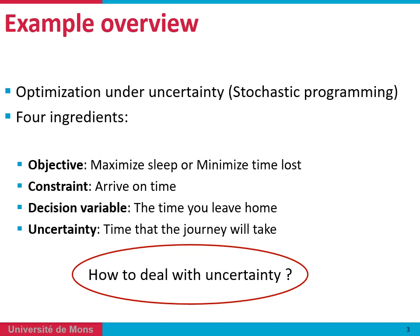Let's have a look at our simple problem, which is also an optimization problem under uncertainty. Usually this kind of problem has four ingredients. It has an objective function, which is here to maximize our sleeping time or to minimize the time spent on the road. The constraint is to arrive on time, and our unique decision variable is to decide what time we should leave home. This problem is affected by uncertainty, which is the time we will have to spend on the road.